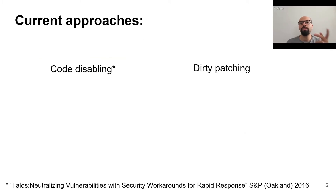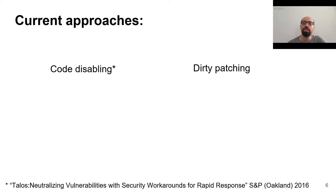Currently, two approaches are used to tackle the unpatched bug problem. The first one is to disable the buggy code component — for example, the buggy function or the entire kernel module. And the second one is to develop a quick but incomplete fix for the bug.